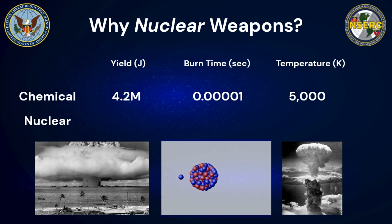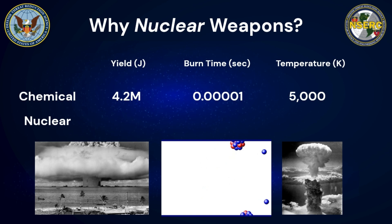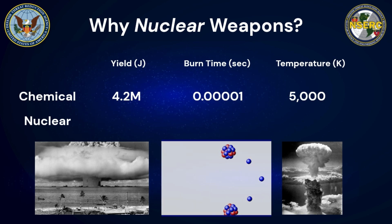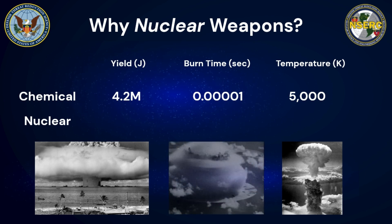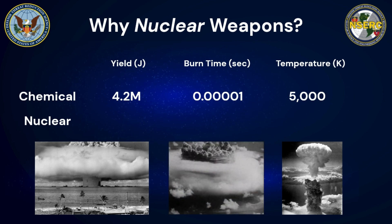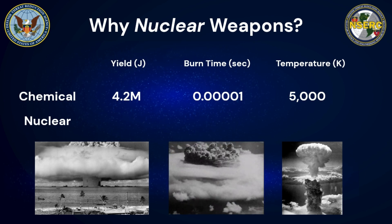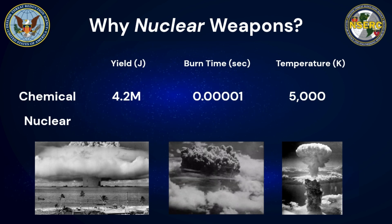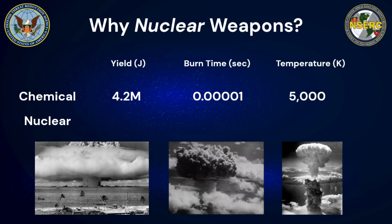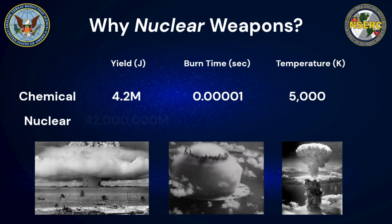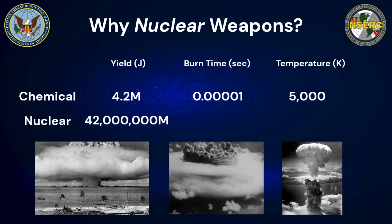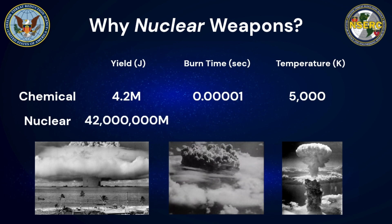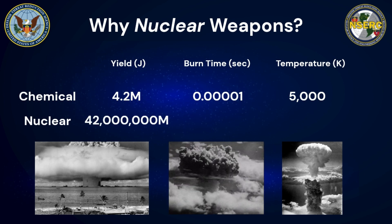Rather, the energy release is due to an instantaneous cascade or chain reaction of uranium atom fissions, which in total releases a tremendous amount of energy because the matter is made up of a lot of atoms. In a practical sense, the energy release from our one kilogram of nuclear fuel is around 4.2 × 10¹³ joules, or around 10 million times greater than the energy released from our TNT.